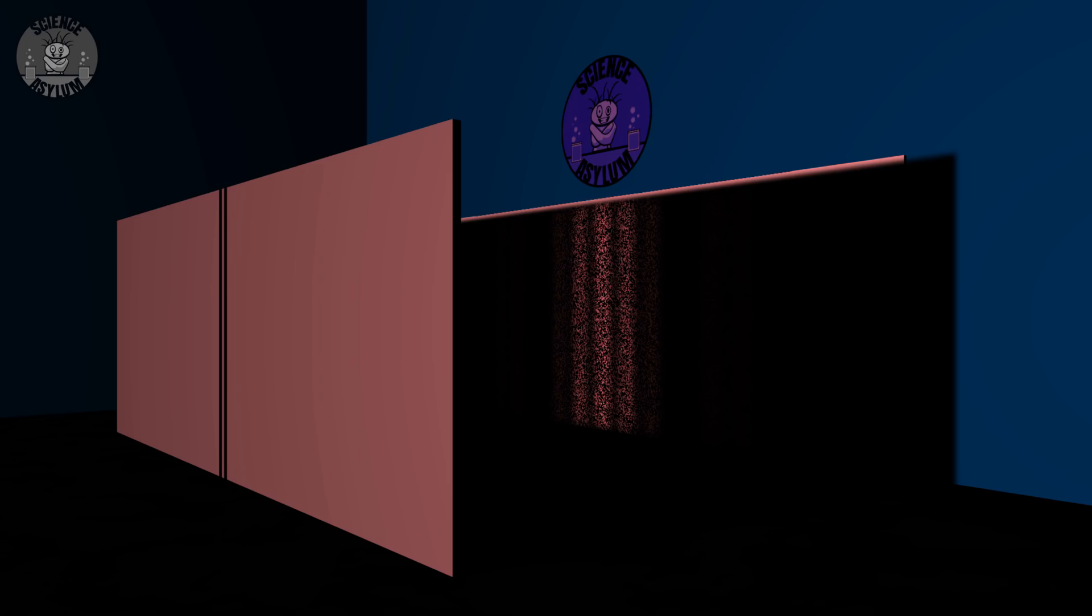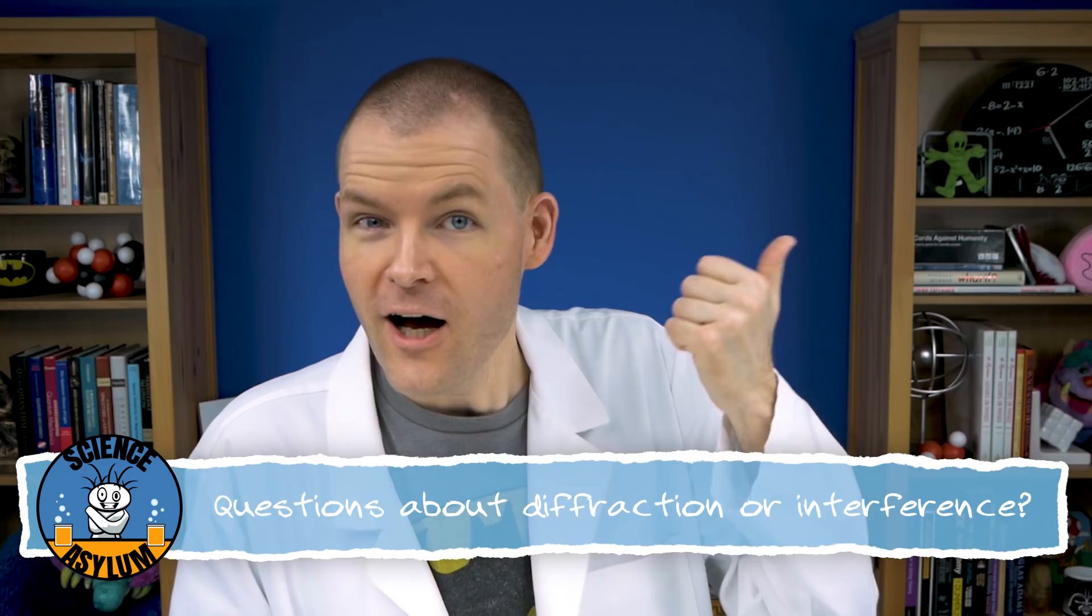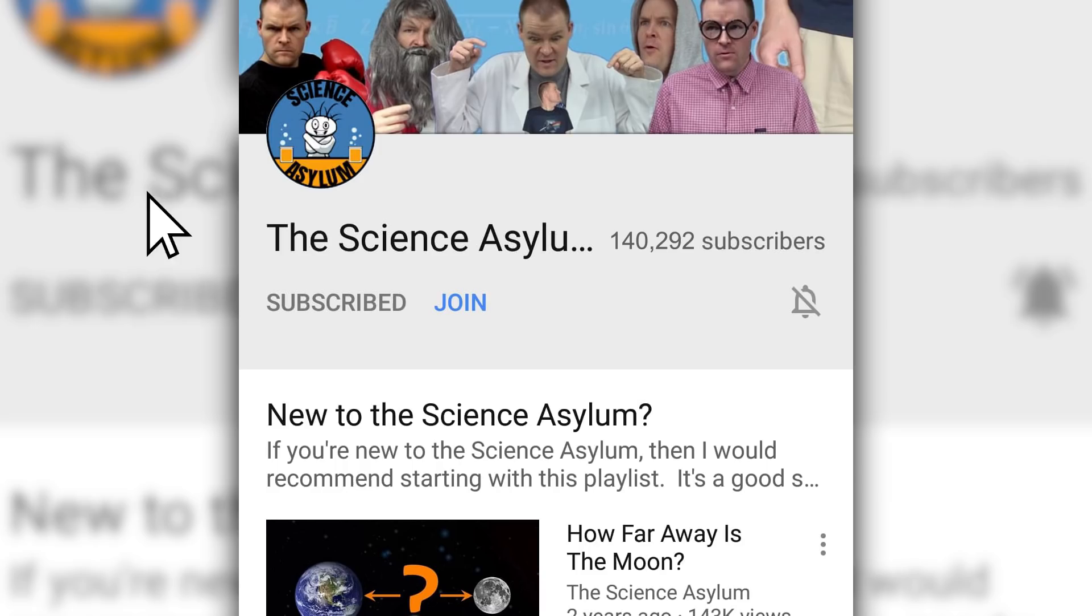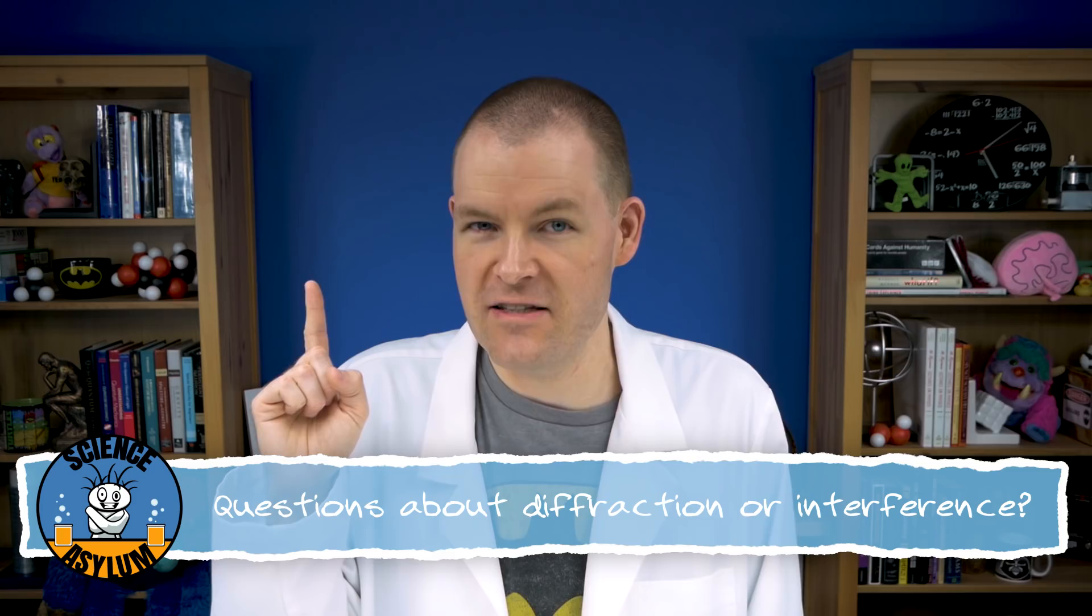We know that because it can interfere with itself. And that interference produces a pattern on a screen. Got any questions about diffraction or interference? Please ask in the comments. If you were hoping for more about photons, don't worry. I'll be going into more detail on that next time. Thanks for liking and sharing this video. Don't forget to subscribe if you'd like to keep up with us. Hit that notification bell if you're really into what we do here. And until next time, remember, it's okay to be a little crazy.